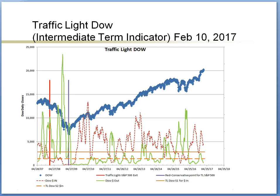Let's look at Traffic Light Dow, an intermediate indicator. This indicator has a good history showing intermediate bullish and bearish signals, especially when the red line and the green line cross over or show divergence. The blue line represents the daily close of Dow Jones. The red dashed line represents money flowing into Dow Jones. The solid green line represents money flowing out of Dow Jones.